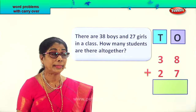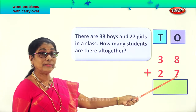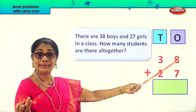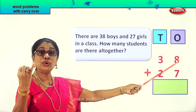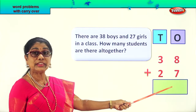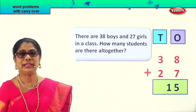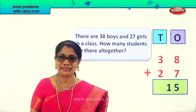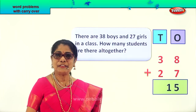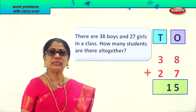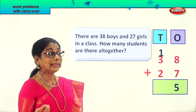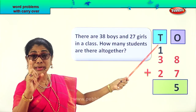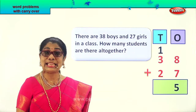Now let's add all the ones together. Eight in the mind, seven on your fingers. After eight: nine, ten, eleven, twelve, thirteen, fourteen, fifteen. So we get fifteen in the ones place. What is fifteen? Ten plus five is fifteen — ten ones plus five ones. Five ones we leave here, and ten ones we carry over to the tens place.